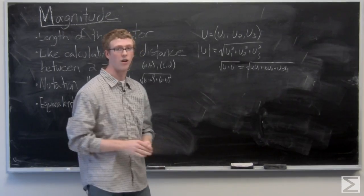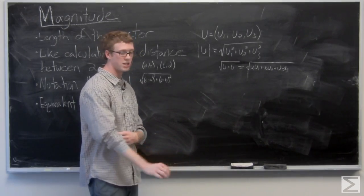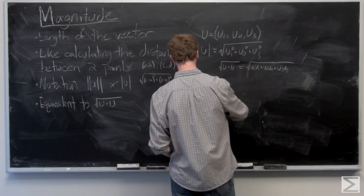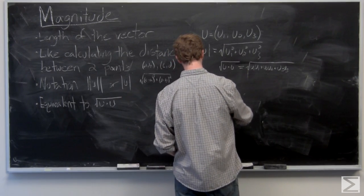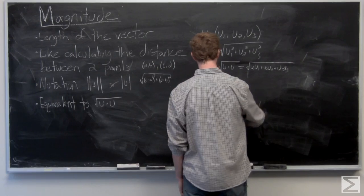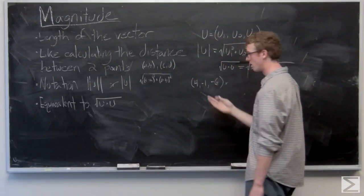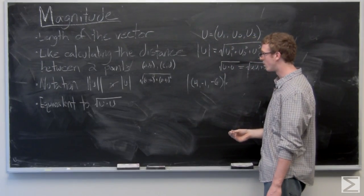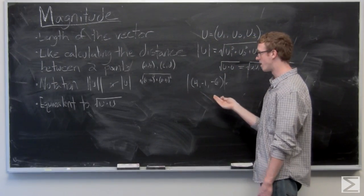We'll take a look at a quick example, just to see what it looks like with actual numbers. So if we want to find the magnitude, you're going to see it denoted like that in a lot of places. That means find the magnitude.